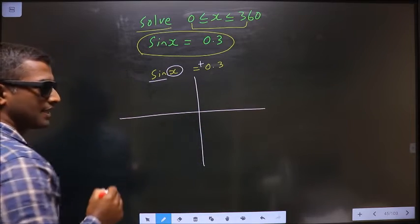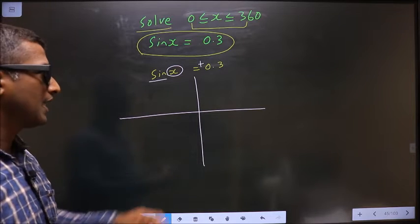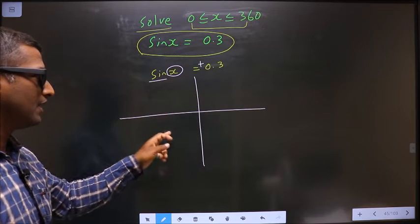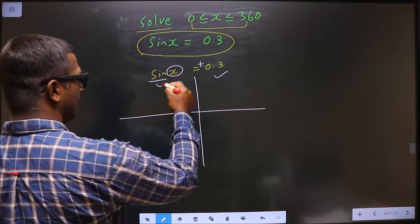So now you check in what quadrants sin is positive. It is like all silver tea cups. So sin is positive in the first and second quadrants.